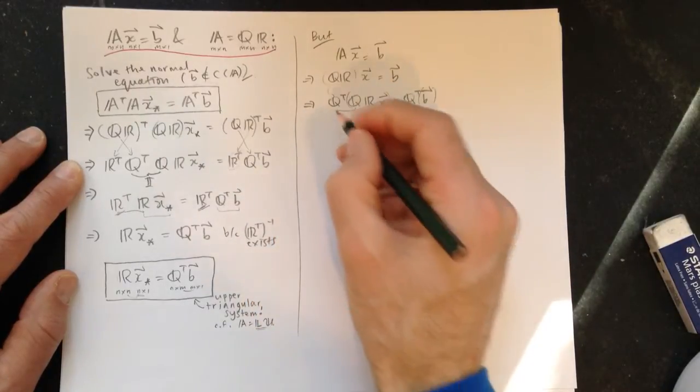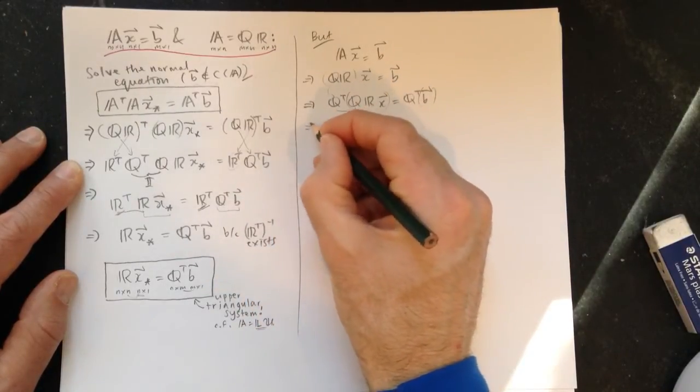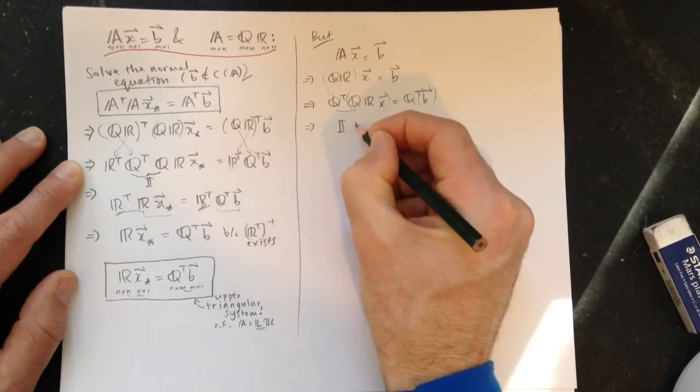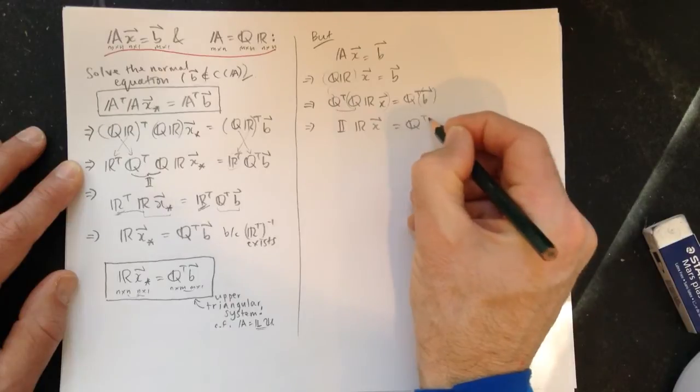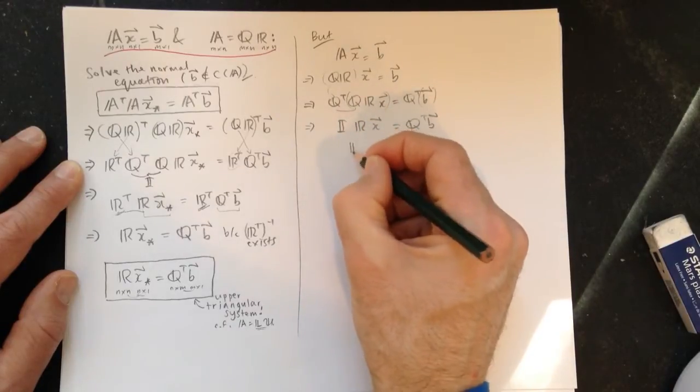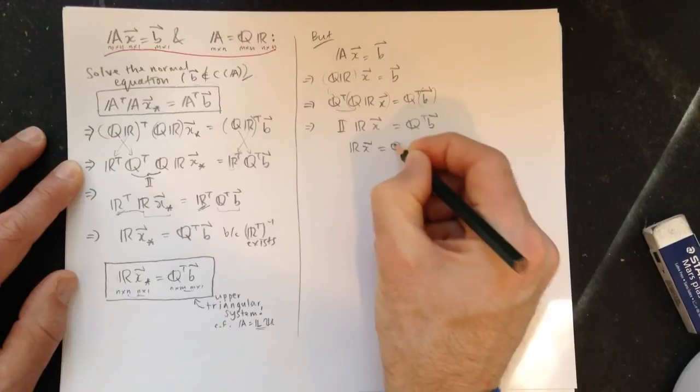Here's the identity. That was the idea. We're peeling it off. Alright. So it's an identity matrix times R times X equals Q transpose B. So we've got our same equation, right? I times R. It's just R X equals Q transpose B.